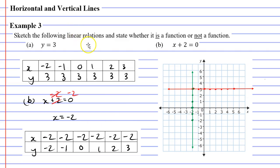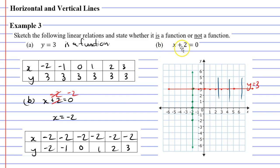Now we had to state whether each was a function or not a function. Starting with question a, we had the equation y equals 3, which is our red line. Using the vertical line test, you'll notice that my vertical lines only pass through one point. That means y equals 3 is a function. Looking at question b, our equation gave us a vertical line graph. When we use the vertical line test, it's actually going to go on top of the whole graph — meaning the vertical line is going over more than one point, in fact every point on the graph. So it's not a function.